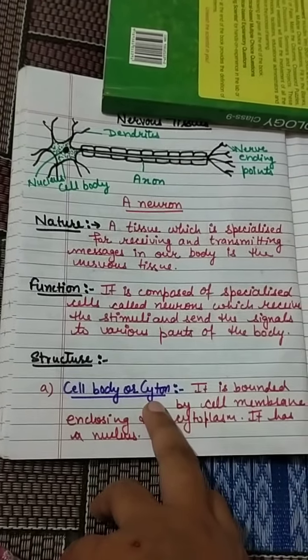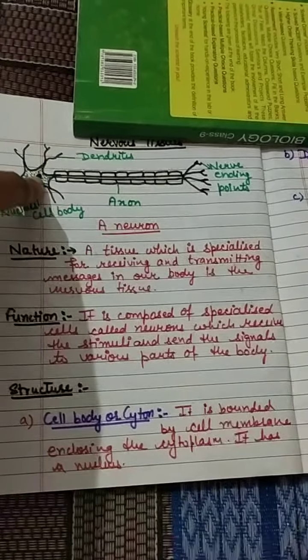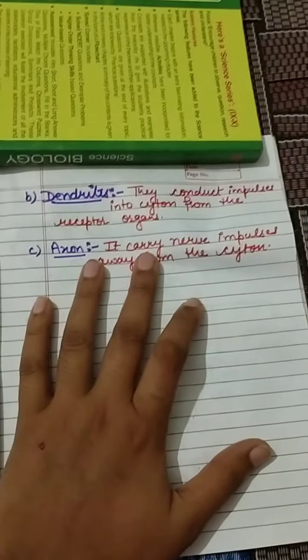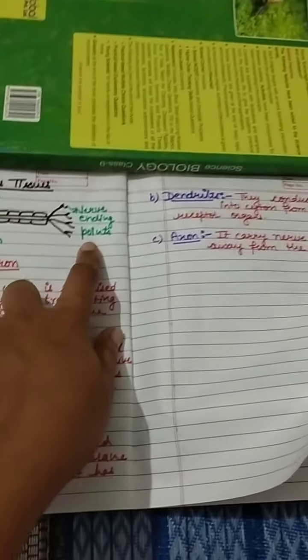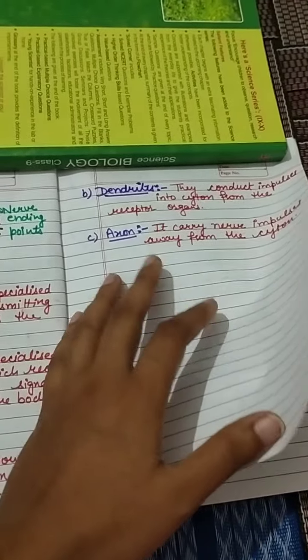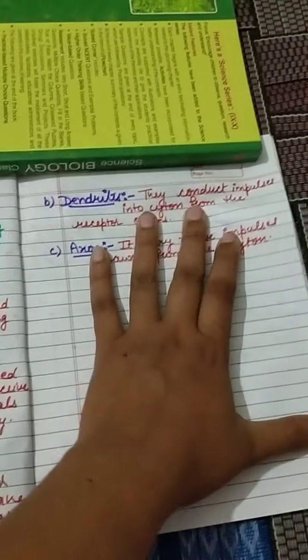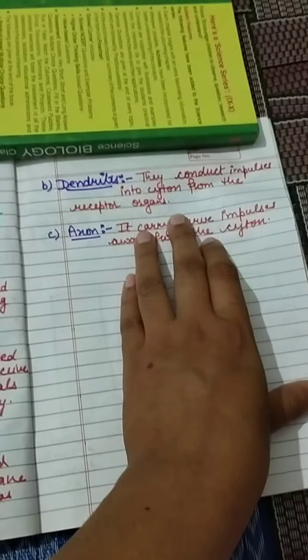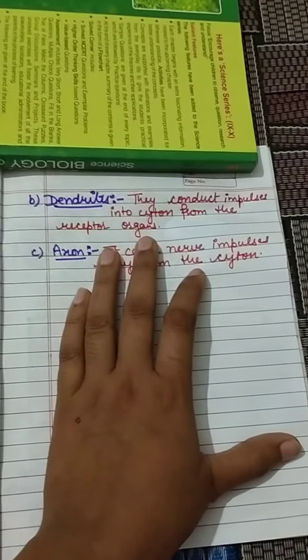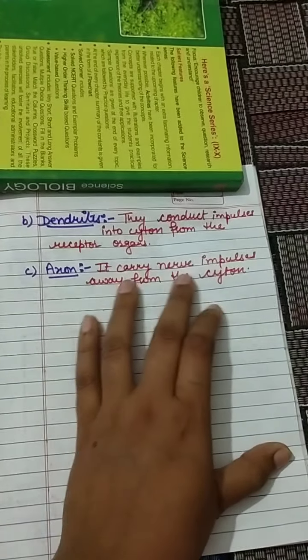About the structure of the neuron: the cell body, also called the cytone, is bounded by the cell membrane and contains cytoplasm and a nucleus. The dendrites conduct impulses into the cytone from the receptor organs — they receive the stimulus, which travels through the axon to the nerve ending parts. The nerve ending parts secrete chemicals that are picked up by further neurons, sending information to the brain. The main five receptor organs present in our body are the eyes, nose, tongue, skin, and ears. The axon carries the nerve impulses away from the cytone.